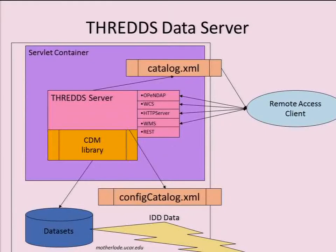That gets us to the Threads data server, in which the CDM library is one of the key components. We have a number of data services that people can access. The IDD data feed is the real-time data coming essentially from the weather service. We bring it in real-time, put it on disk, and serve it out through the Threads data server using servlet containers. You configure your stuff with a config catalog, which tells the data server what to serve out, and the user sees a client version that tells them what's available.